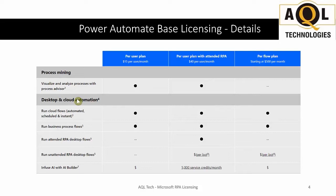Process mining — this is the Process Advisor — lets you identify repetitive processes in your organization. You can see it's included with both the per-user plan with and without RPA. Cloud flows and business flows are part of all three plans, but as you come down to the bottom this is where you start seeing the RPA-specific details.